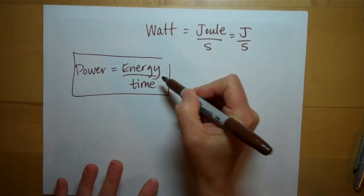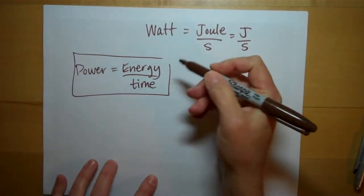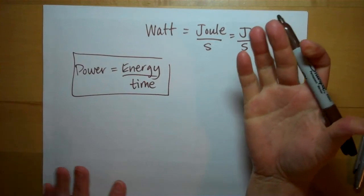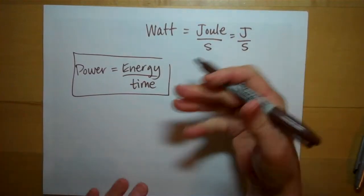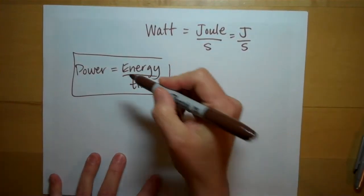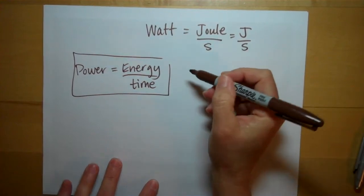So power is a rate. Anytime you divide by time, you're talking about a rate. Like miles per hour. You're talking about the rate at which you're moving. Power is the rate at which you're using energy.